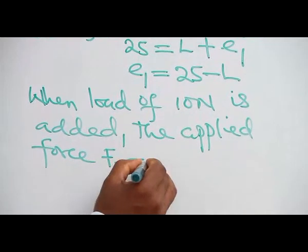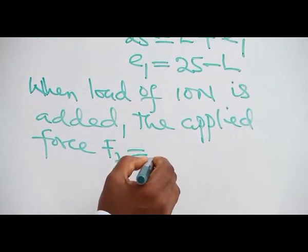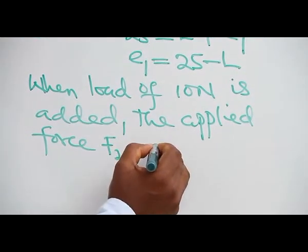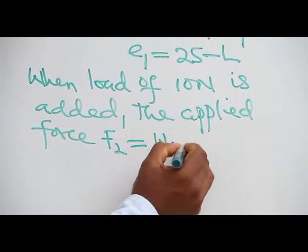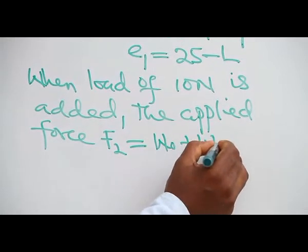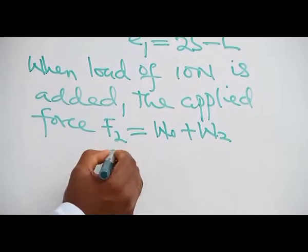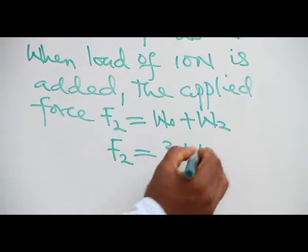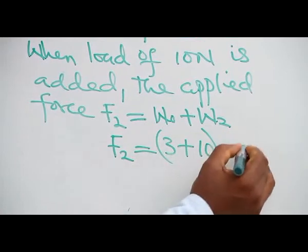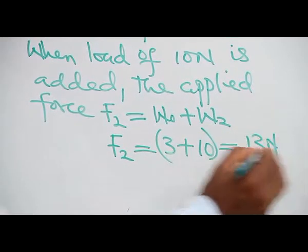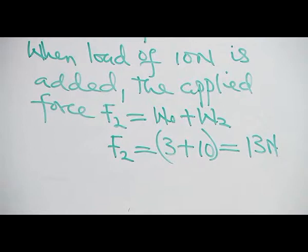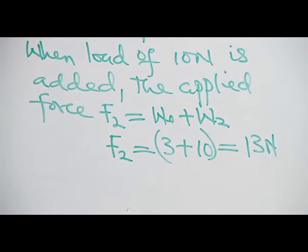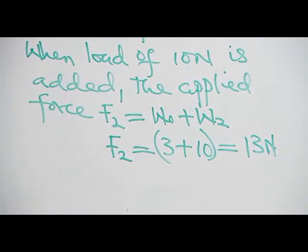F2 will give us the natural length of the spring plus the load on it, which I will call W2. So our F2 will give us 3 plus 10, which gives us the total applied force of 13 N. This resulted in an extended length or new length of 30 cm.